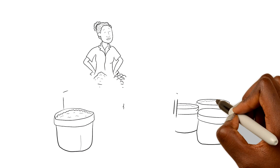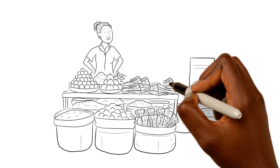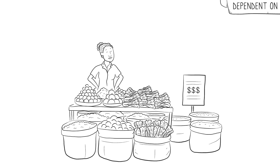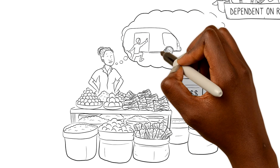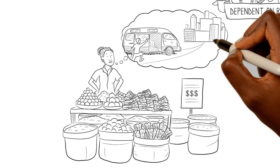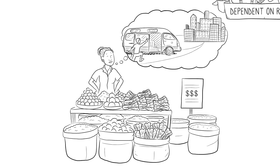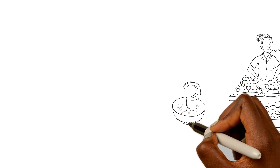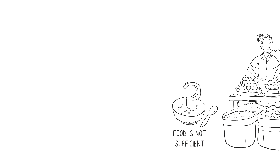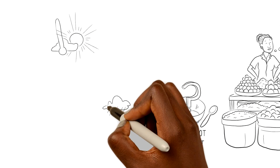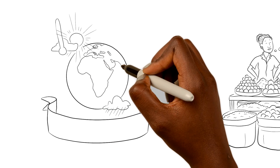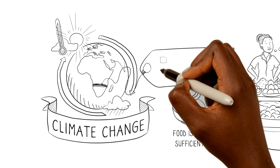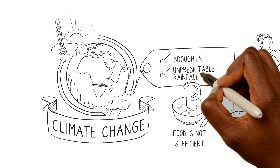Jane sells most of her crops, as well as eggs, and she keeps some for their own consumption. Farming is not that profitable anymore, which is why her husband is working in a nearby city. Yet the food she produces is not sufficient for the family and their diet is monotonous.